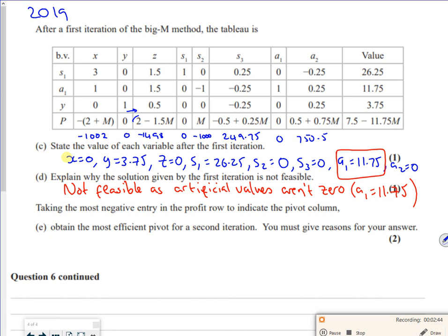I'd have to identify, because it's saying, taking the most negative entry in the profit row, but it's saying you must give reasons for your answers. So we'd have to say that column Z has most negative entry, 2 minus 1.5M.